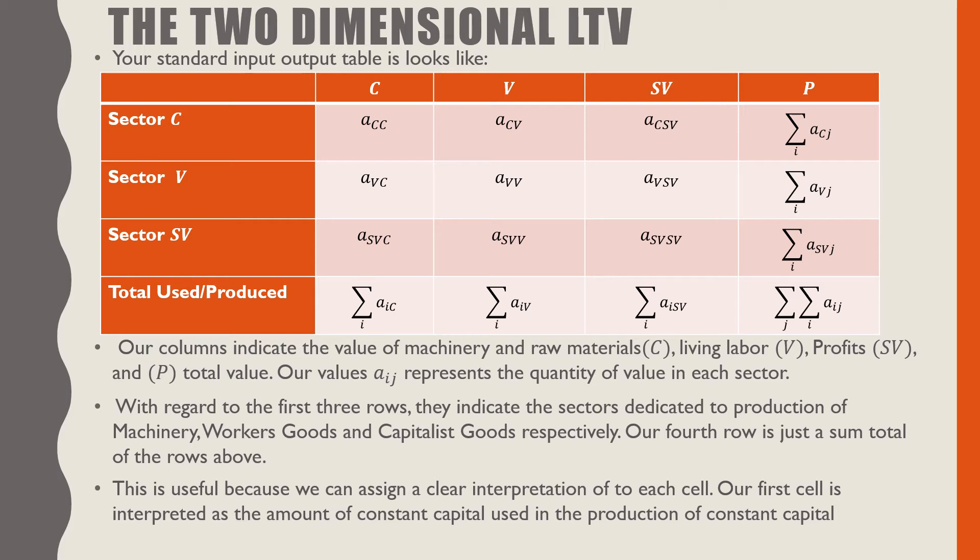With regards to the first three rows, they indicate the sectors dedicated to production of machinery, workers, and capitalist goods respectively. Our fourth row is just a sum total of the rows above. This is useful because we can assign a clear interpretation to each cell. Our first cell is interpreted as the amount of constant capital used in the production of constant capital.